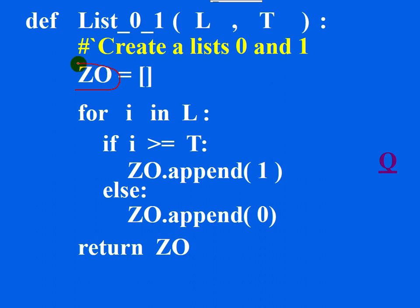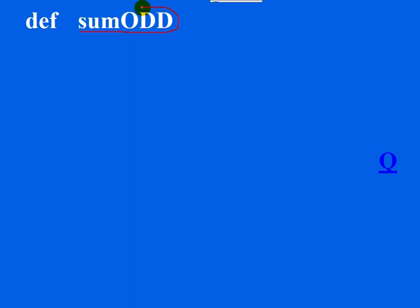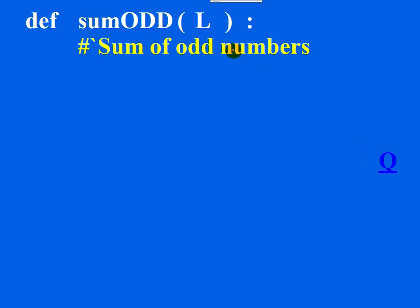The next question: write a function to find and display the sum of odd numbers present in a list. You need to find the sum of odd numbers from a list of numbers. Start with the keyword def followed by an appropriate name — no particular name is mentioned, so any suitable name works — followed by parentheses and a colon. The colon marks the beginning of the block of statements associated with the function. The list should be passed as an argument, and write a docstring.